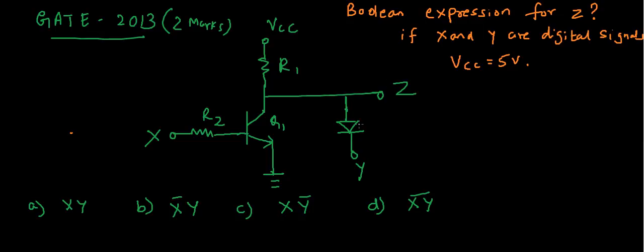The question is, in the circuit shown below, Q1 has negligible collector to emitter saturation voltage and it has negligible voltage across this diode under forward biased condition. And also they have given VCC is 5 volts and this X and Y are digital signals with 0 volt as logic 0 and 5 volt as logic 1.